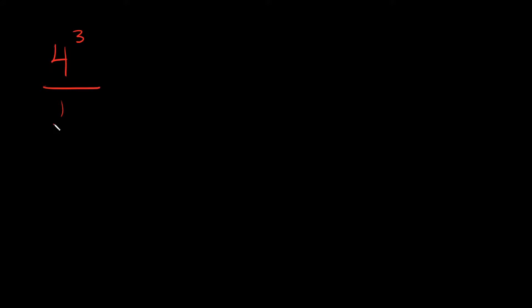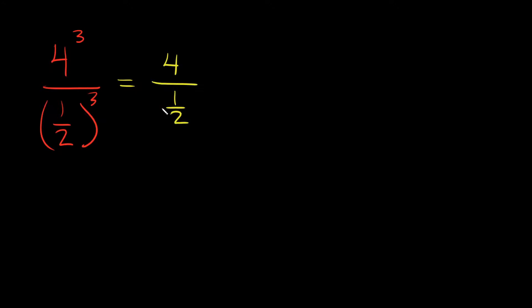What if we had 4 cubed over one-half cubed? We're going to divide the bases again. Our two bases are 4 and one-half, and we're going to raise the whole thing to the third power — we have a 3 here and a 3 here, so we keep the 3.